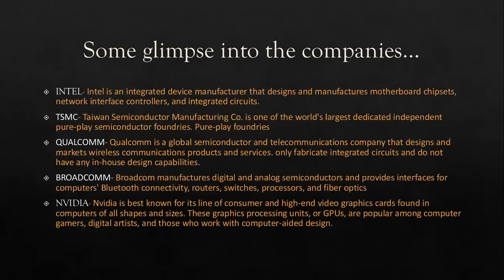Intel, headquartered in Silicon Valley, California, manufactures and designs integrated circuits, microprocessors, and motherboards. TSMC, headquartered in Taiwan, has the largest independent fab labs and manufactures chips for companies like Apple and Qualcomm, which does not have its own fabrication lab. Qualcomm is a global semiconductor and telecommunications company responsible for technologies like 5G, but contracts manufacturing to companies like TSMC.